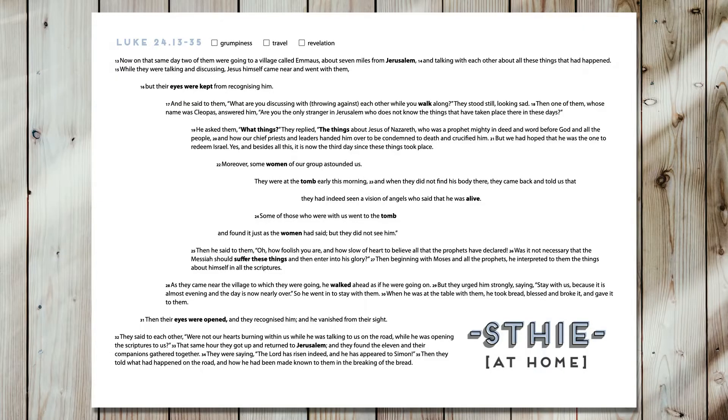I recommend you get the sheet because I've laid it out in a particular way, which I'll explain in a minute. There's a space at the top for you to highlight three different themes which we're thinking about today. We're going to think about the themes in this story of grumpiness, travel, and revelation. That's what you need to find in the Bible.